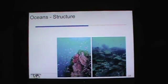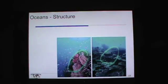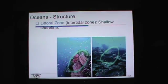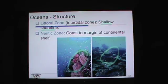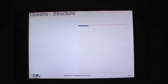Look at the structure of coral fans in the ocean — amazing architecture that attracts so much biota, so much life. There's a littoral zone, a very shallow shoreline. Coral reefs are found just on the edge of that littoral zone. The neritic zone runs from the coast to the margin on the continental shelf.